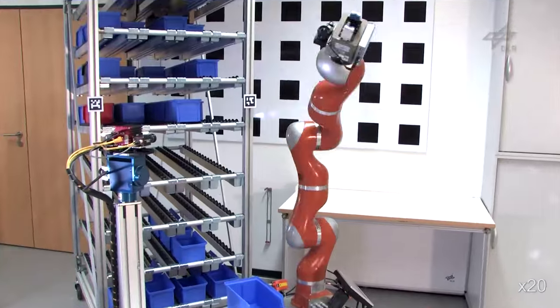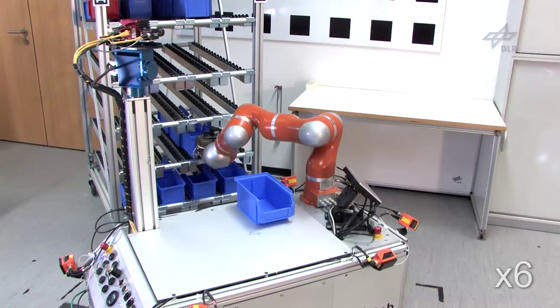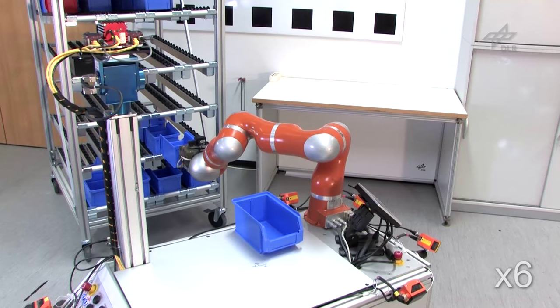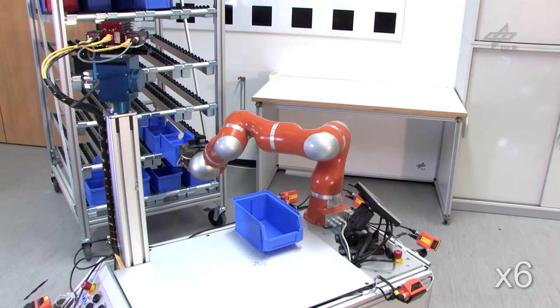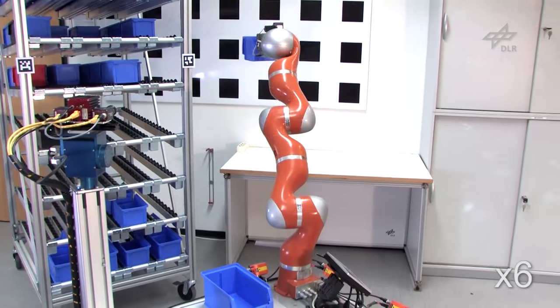For retrieving empty small-load carriers from the shelf, the robot arm is switched to low-stiffness impedance control mode and the platform's translational degrees of freedom are utilized.